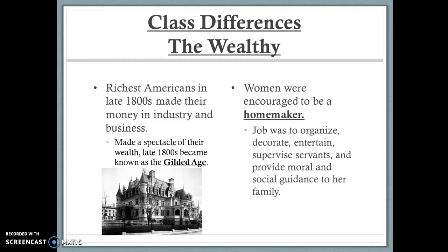The richest Americans in the 1800s made their money in industry and business — think industrial tycoons like Rockefeller and Carnegie. Most were newly wealthy and made a spectacle of their fortunes, as seen in the castle-like houses they built. This era became known as the Gilded Age — 'gilded' meaning gold and shiny on the outside but rotten on the inside — reflecting widespread belief that industrial tycoons of the period were deeply corrupt.